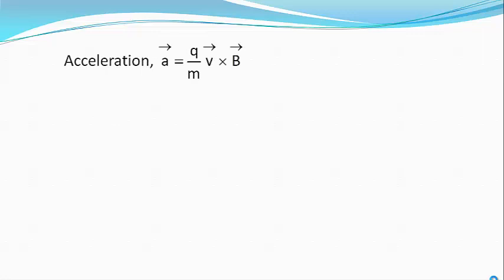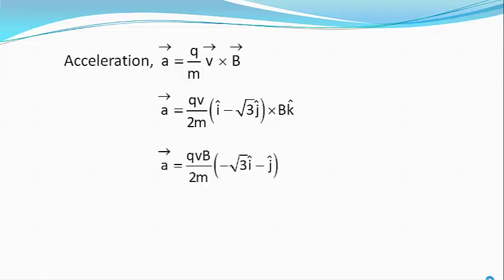Or acceleration a vector equals q divided by m times v vector cross B vector, or a vector equals qv divided by 2m bracket i minus root 3 j bracket cross b times k cap, or a vector equals qv divided by 2m bracket minus root 3 i cap minus j cap.